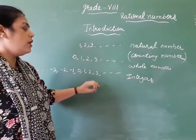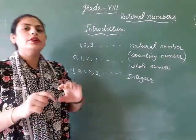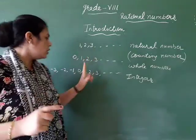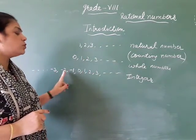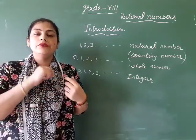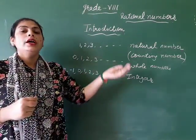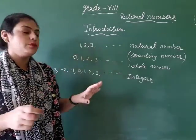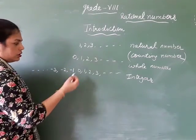Along with integers, when we add fractional numbers — because there are infinitely many numbers between any two numbers, for example between 1 and 2, or between minus 1 and 2 — there are infinitely many numbers like 1.1, 1.2, or 1/2.